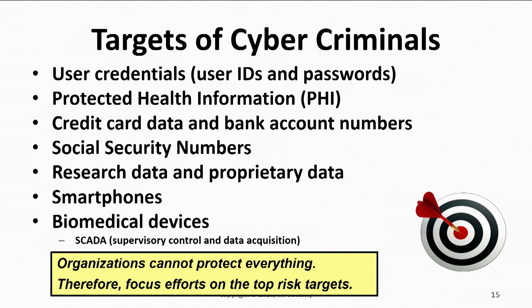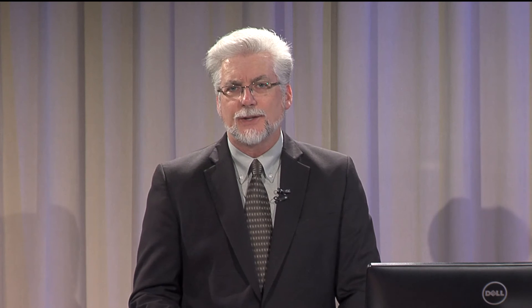What are the targets of cyber criminals? What are they looking for? Today, the number one thing they're going for is user IDs and passwords. Organizations are encrypting data, and the way to get to that data is to be an authorized user. If you can present a proper user ID and password, the data will be unencrypted. Encrypted data is no good to a hacker — they need it in plain text format, so they go after user credentials. Many times they start with a simple user and then try to elevate their privileges to something like a system administrator.